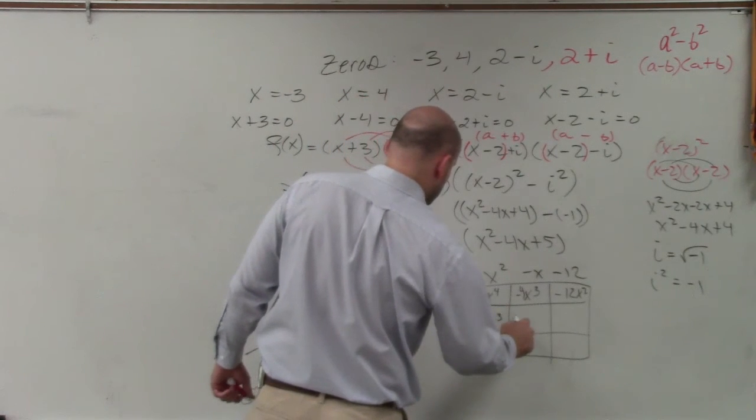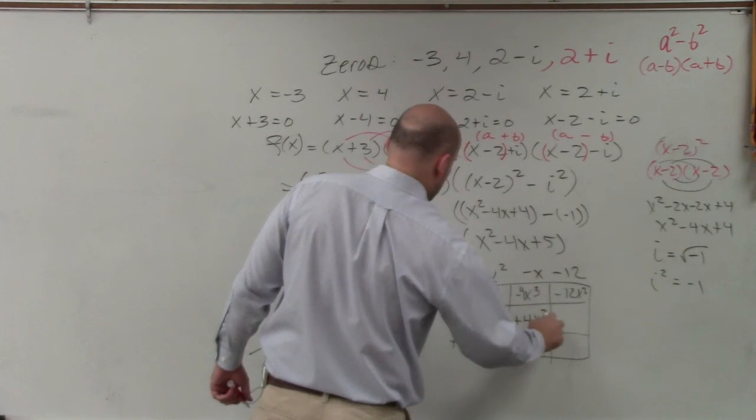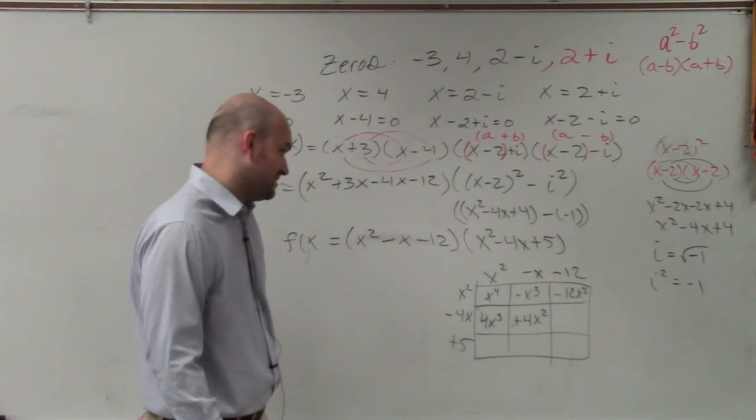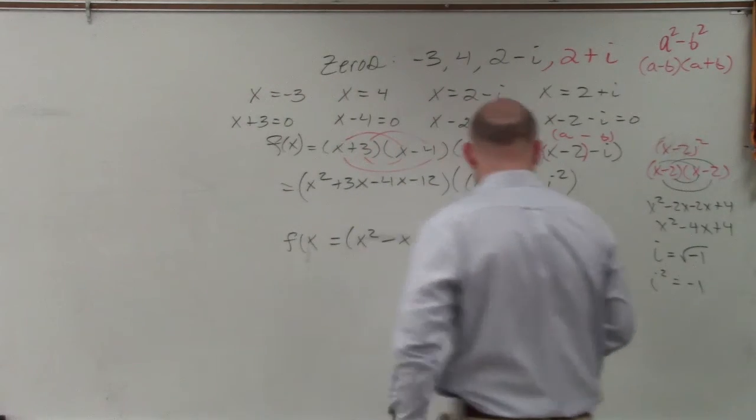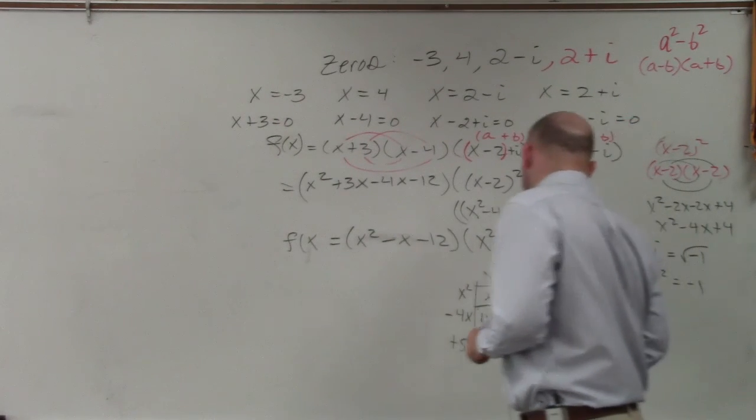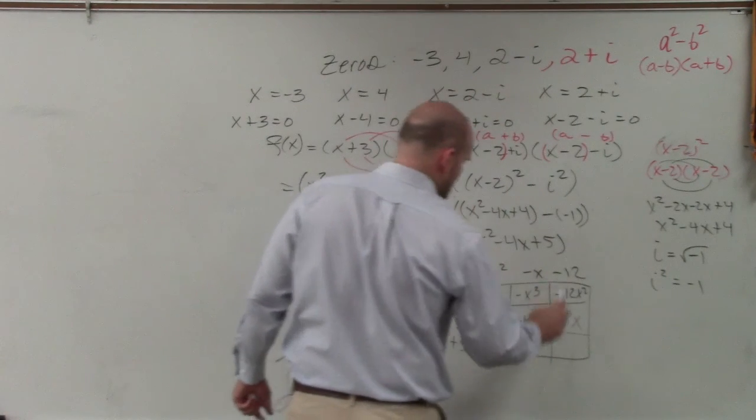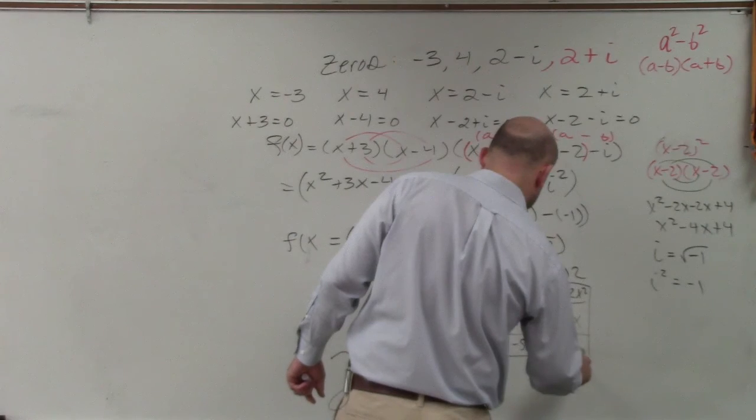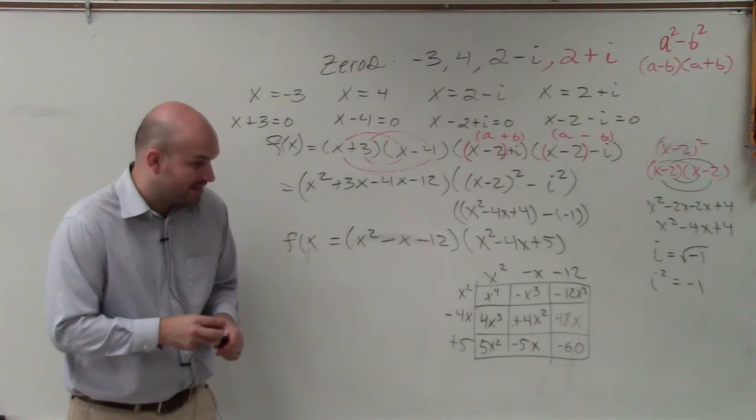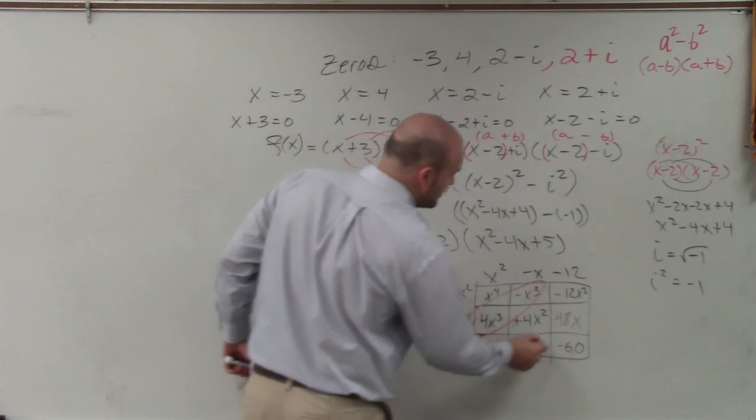So in doing that, I get x⁴ minus x³ minus 12x². Students catch an error—it should be minus 4x². This becomes positive 4x² here, negative 48x becomes positive 48x. Then over here, 5x² minus 5x and then minus 60. What's nice about this is you're just doing length times width to find the area of each box. And also, the diagonals are like terms.